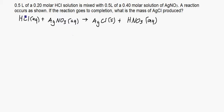So the problem is 0.5 liters of a 0.2 molar hydrochloric acid solution is mixed with 0.5 liters of a 0.4 molar solution of AgNO3. A reaction occurs as shown. If the reaction goes to completion, what is the mass of AgCl produced?